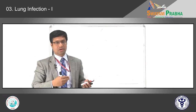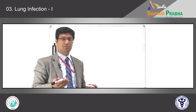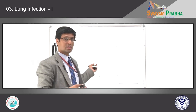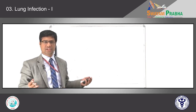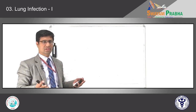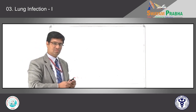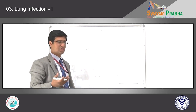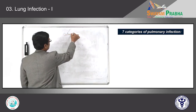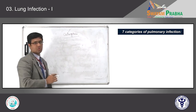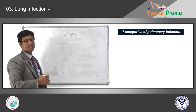We have learnt the definition and pathophysiology of pneumonia, and how it looks on microscopy. Now we see how to classify pneumonia. There is a clinical-pathological classification followed for the benefit of pathologists, clinicians, and treating physicians. There are seven categories of pneumonia depending on the cause.